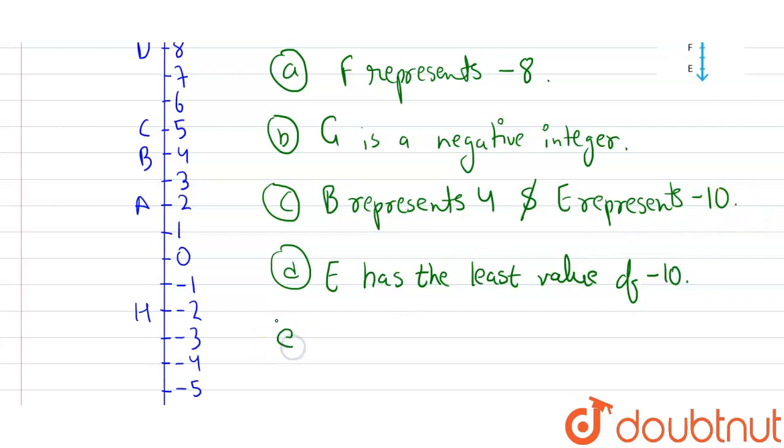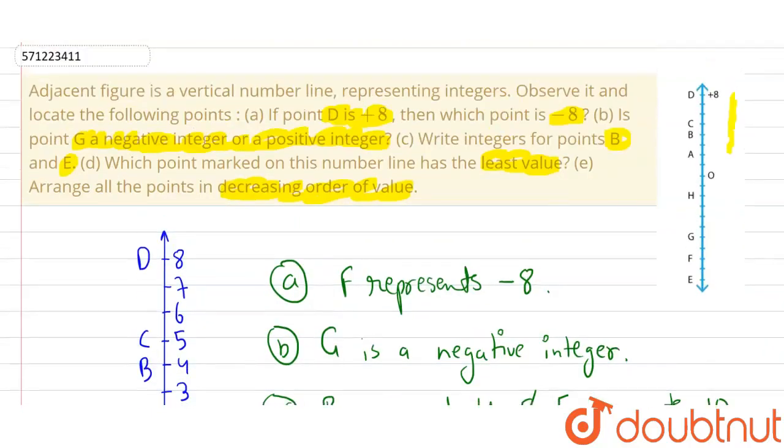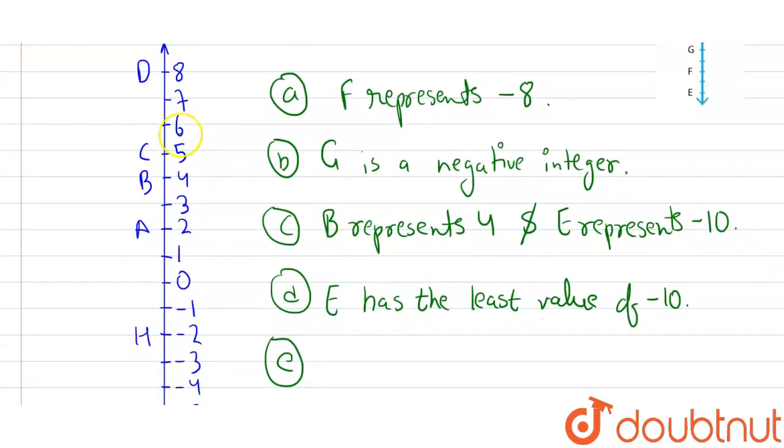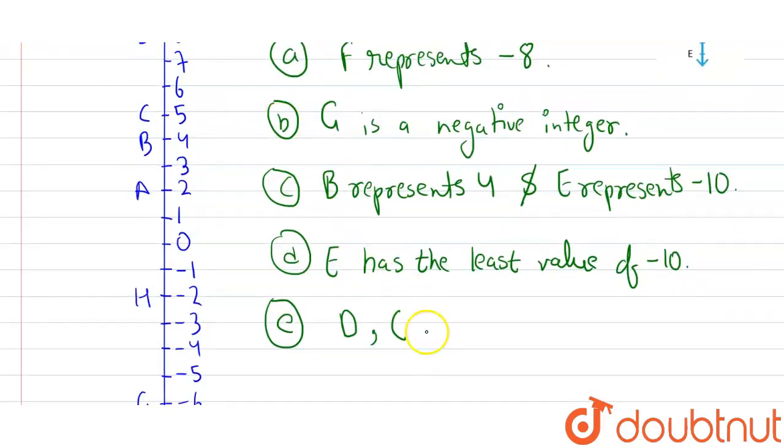Now, let's see the last part, the E part, which is arrange all the points in decreasing order. So we can write this as: D, C, then B, A, then O (that is 0), then H, then G, then F, and last is E, which is the answer. Thank you.